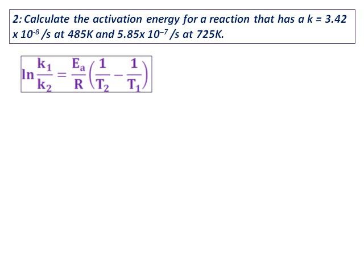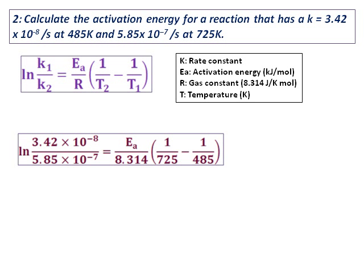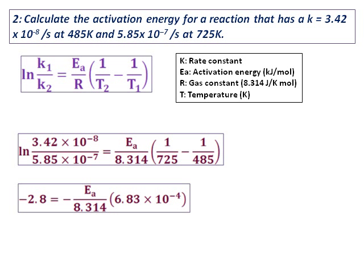Use the equation ln(k1/k2) equals (Ea/R)(1/T2 minus 1/T1), where k is the rate constant, Ea is the activation energy, R is the gas constant, and T represents the two temperatures. Substitute all values, ensuring temperatures are in Kelvin and R is in joules. After converting to kilojoules, Ea equals 34 kJ/mol.